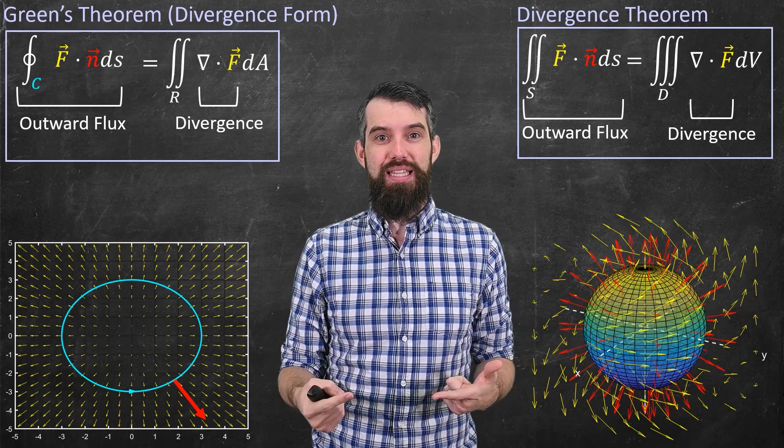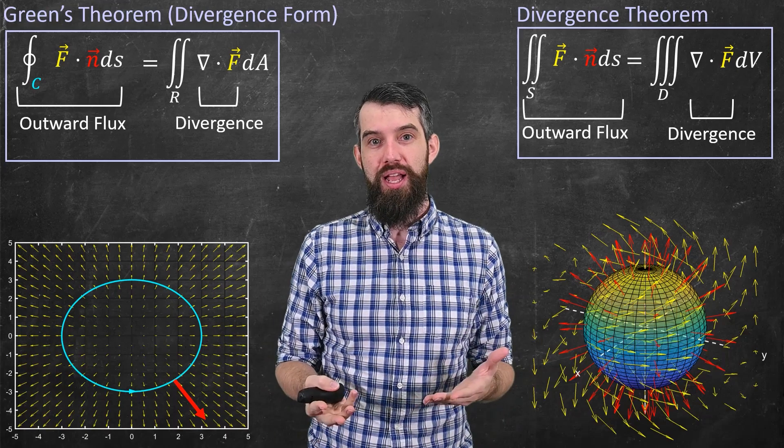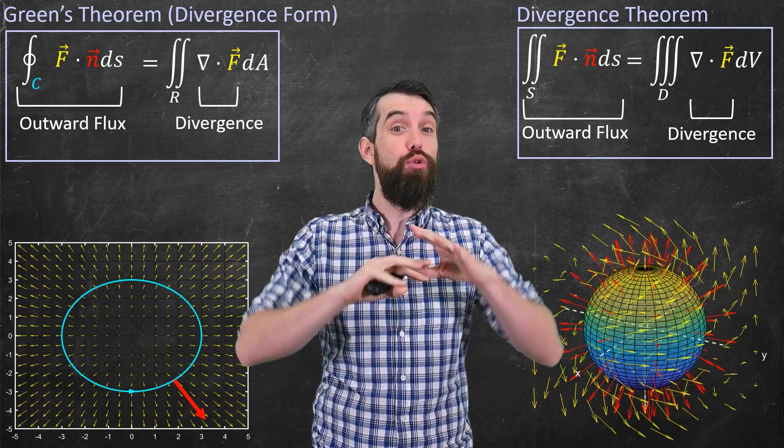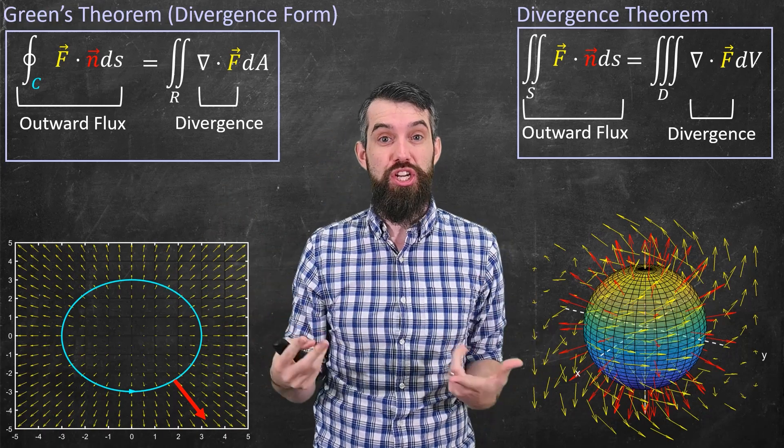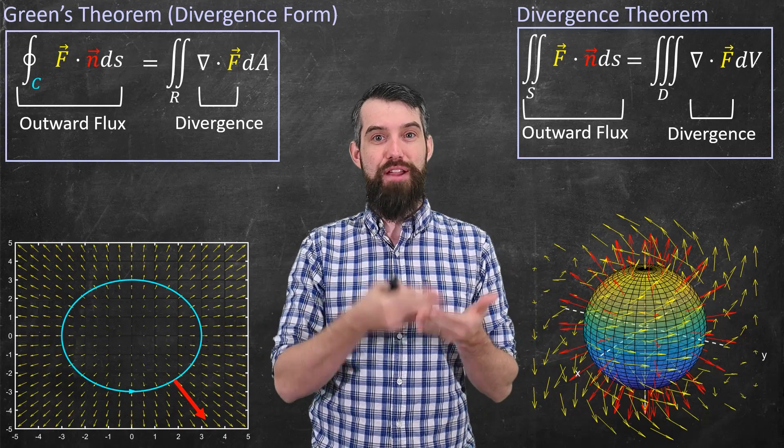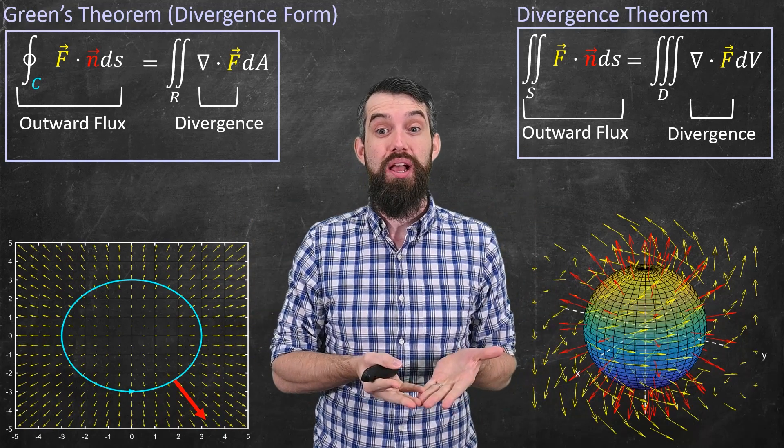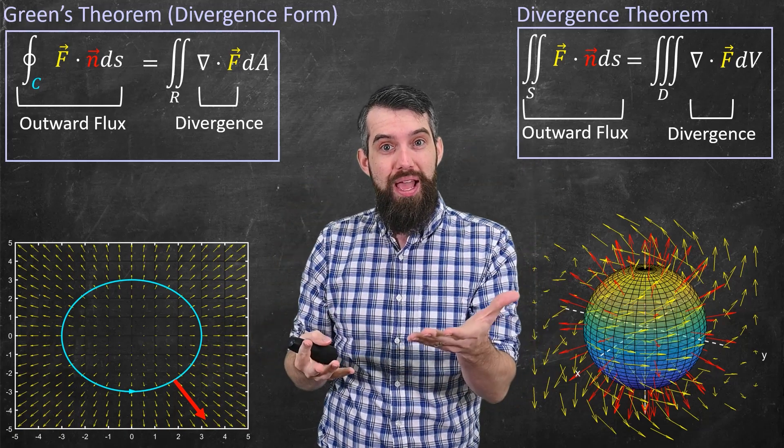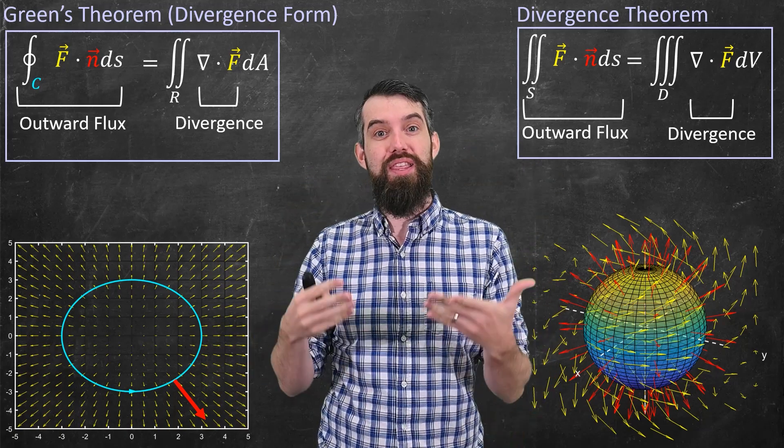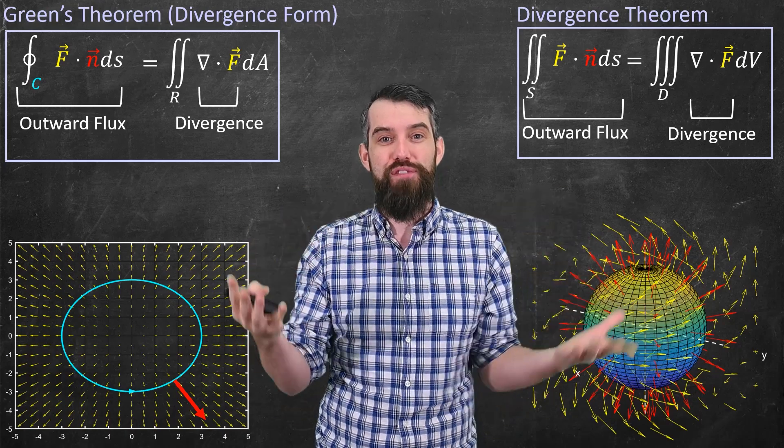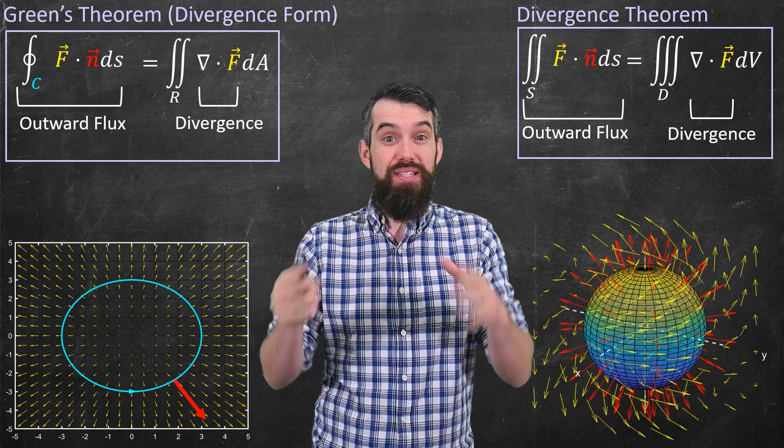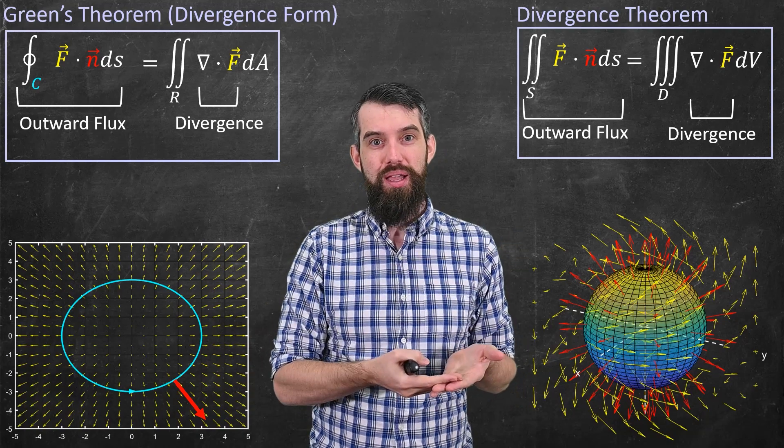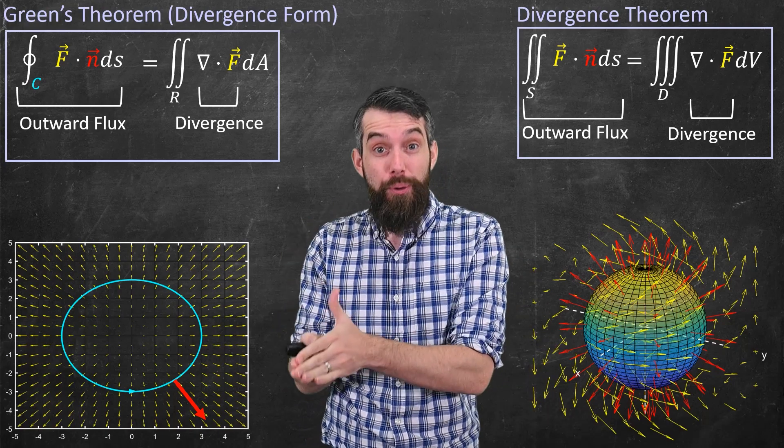These are global properties—they're about entire curves or entire surfaces. The two theorems we saw about outward flux were Green's theorem in its divergence form and the divergence theorem. What's core about these is that this property around the boundary, what I'm going to call a global property, could be equated with adding up or integrating a local property of the divergence throughout the entire region.